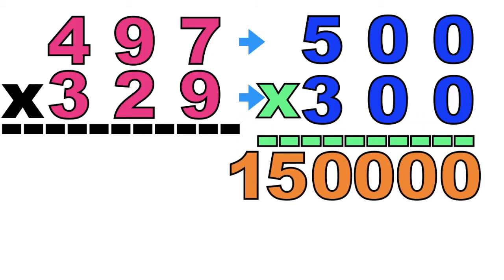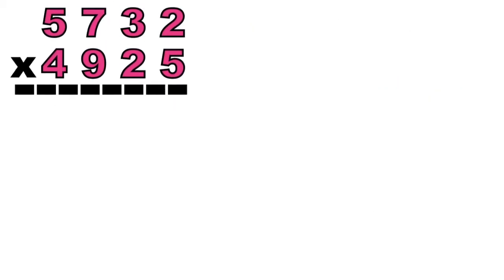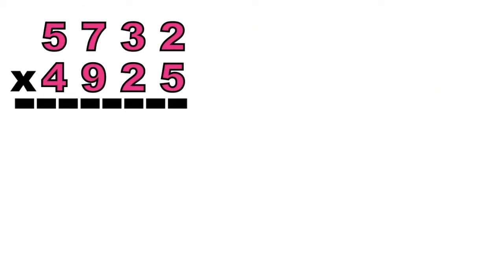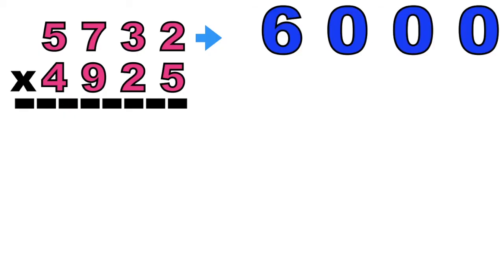How about if we have 5,732 times 4,925? Let's estimate the first factor, 5,732. It will become 6,000. Why 6,000? Because beside digit 5 we have digit 7, and digit 7 is 5 or more. That means we will round it up. So we have 6,000.